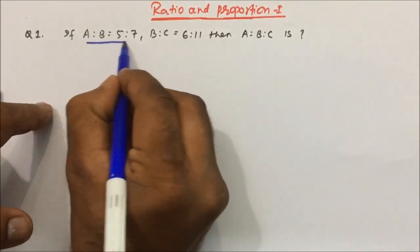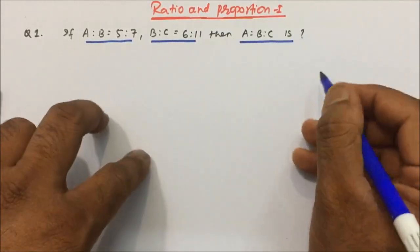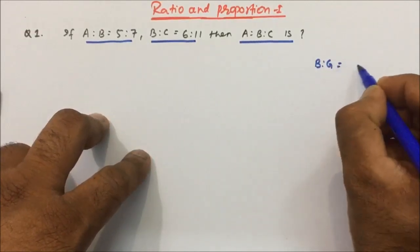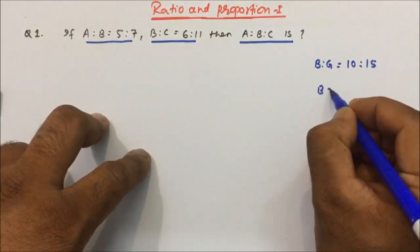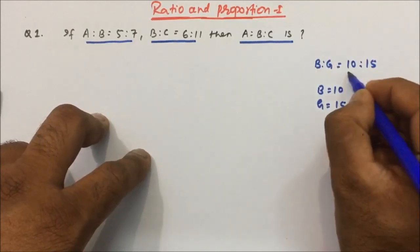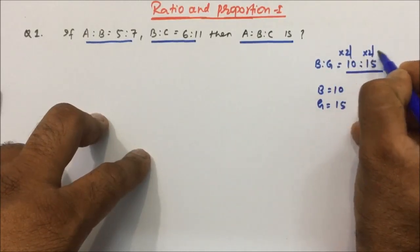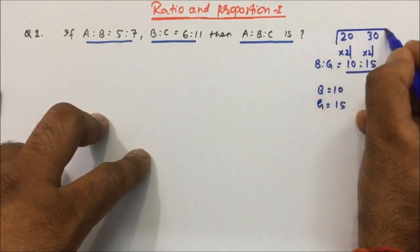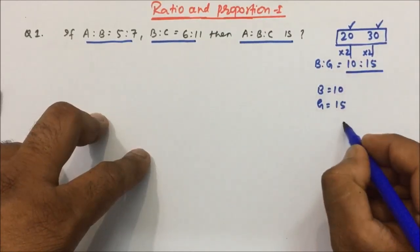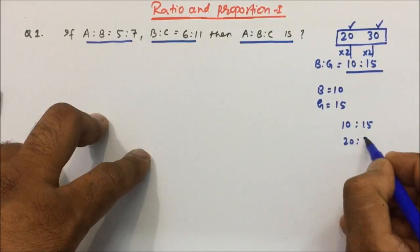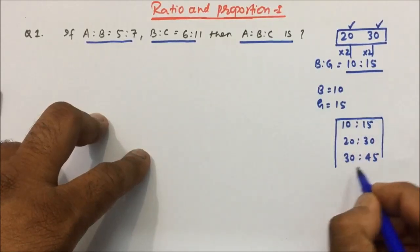The first question is: if A is to B is 5 is to 7, and B is to C is 6 is to 11, then find the ratio between A, B and C. Now suppose if you are given a ratio — boys is to girls is 10 is to 15 — it does not mean the number of boys is 10 and the number of girls is 15. This is just the ratio which can be any value. If you multiply 2 on both sides, it becomes 20 and 30. So 10:15, 20:30, 30:45 — these are just ratios, not the actual values.